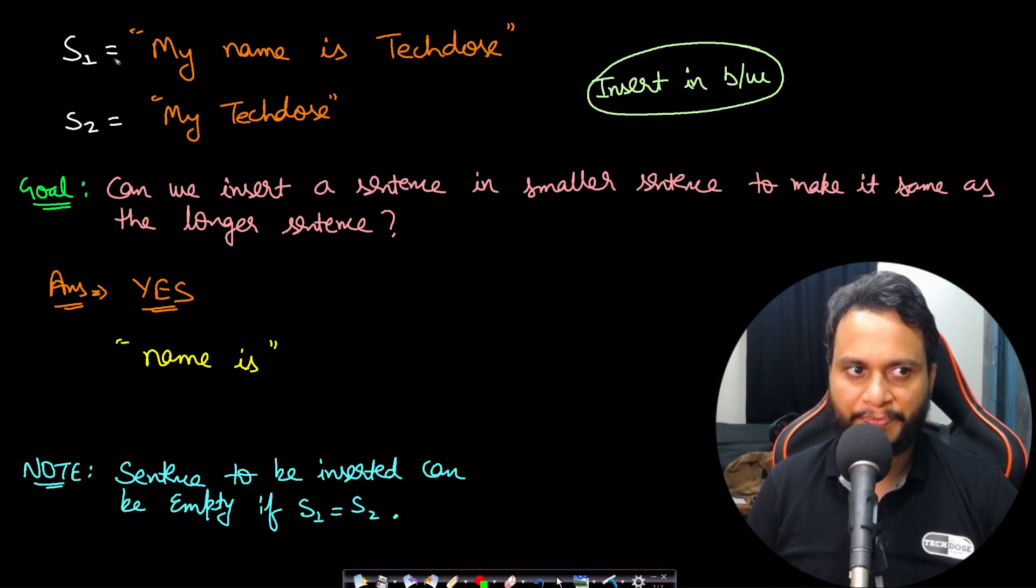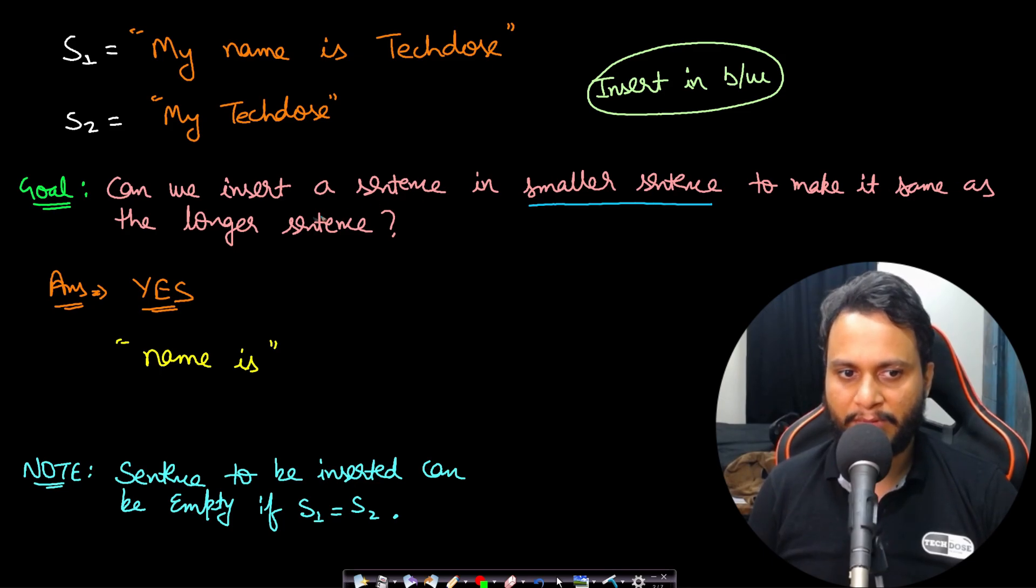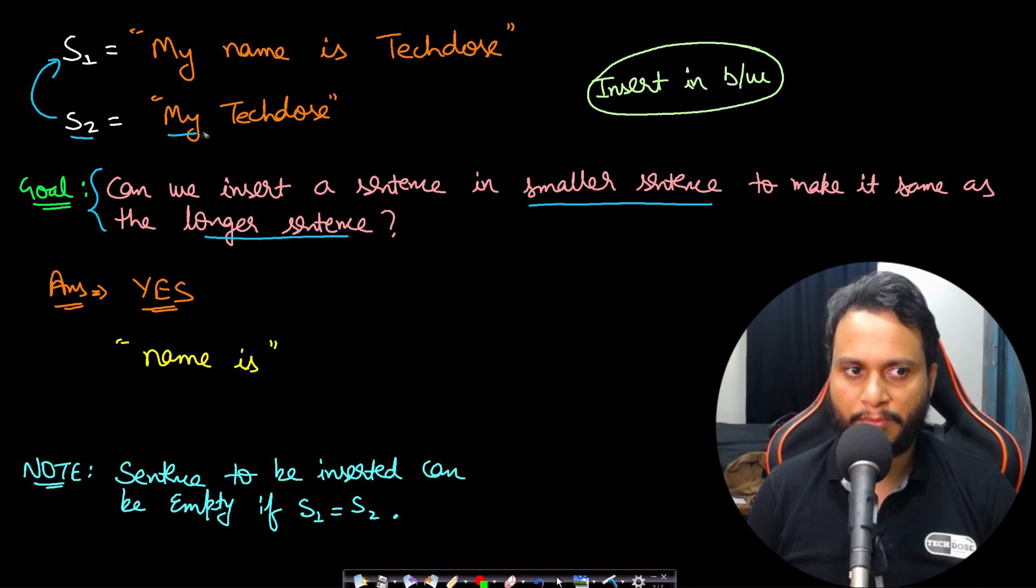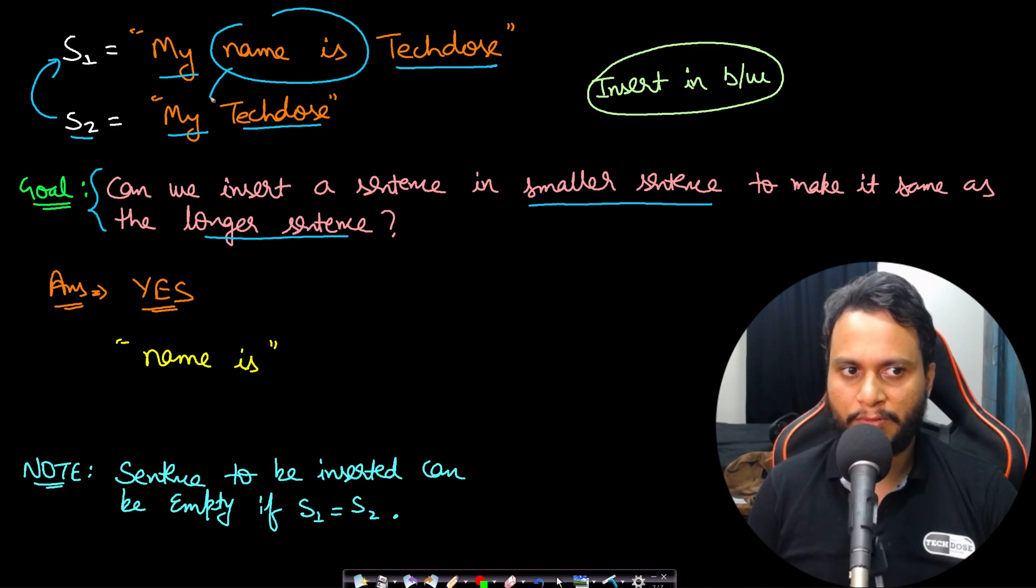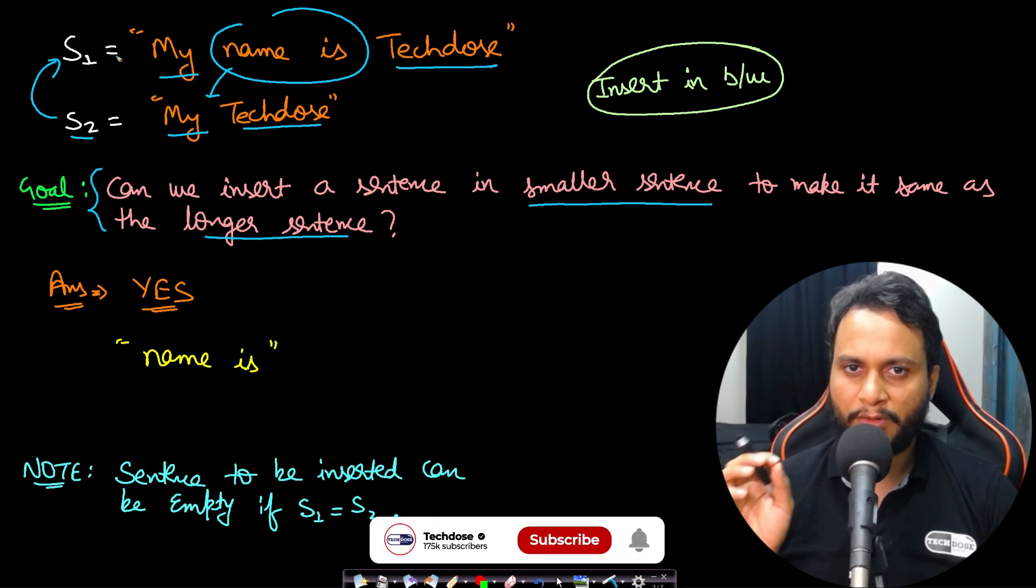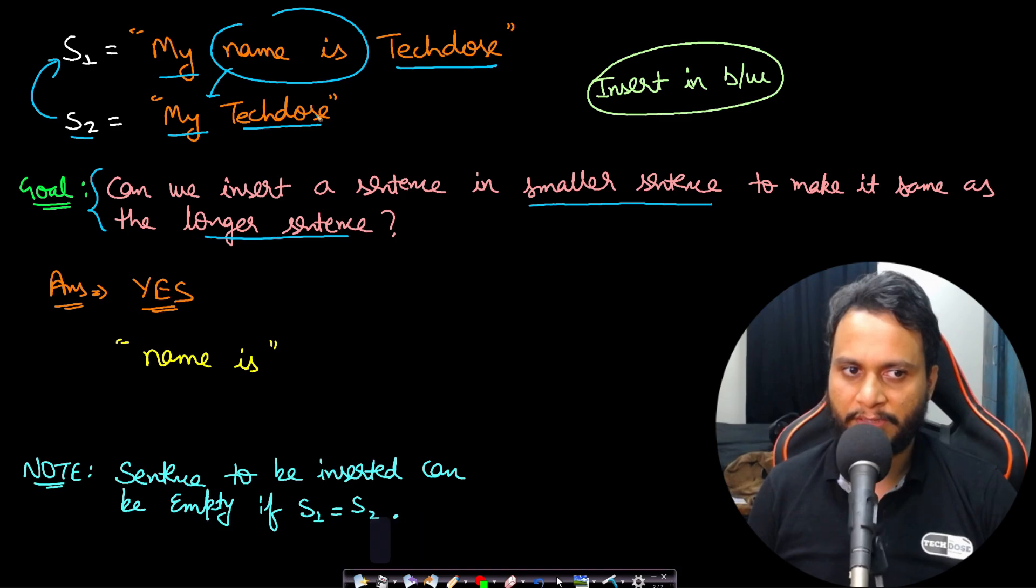Let's look at an example for better understanding. Let's say sentence1 is 'my name is TakeDose' and sentence2 is 'my TakeDose'. Our goal is to find out: can we insert a sentence in the smaller sentence to make it the same as the longer sentence? For this to happen, all the words of S2 must occur in S1 and they have to match. The 'my' is matching in the beginning and 'TakeDose' is matching at the end. Now we can insert 'name is' in between 'my' and 'TakeDose' in string2 to make it equal to string1. We can always do insertion in the smaller string to make it equal to the larger string, but the rest of the words which are present in the smaller string must always already be present in S1.